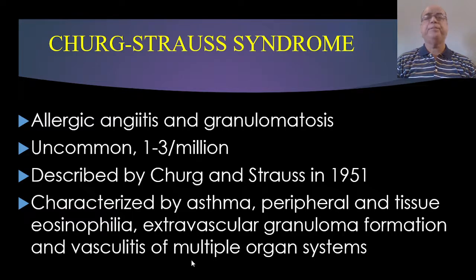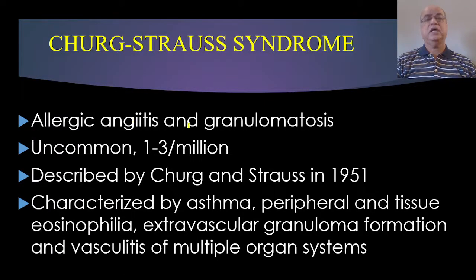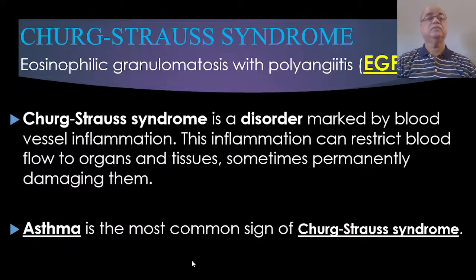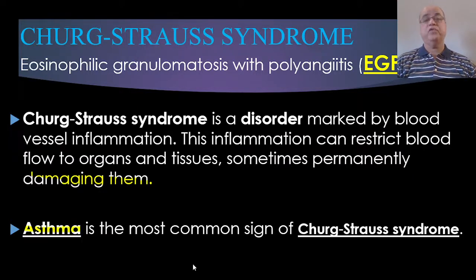Next is Churg-Strauss syndrome, also called allergic angiitis and granulomatosis. It is very uncommon — about one to three cases per million. It was described by Churg and Strauss in 1951. It is characterized by asthma, peripheral and tissue eosinophilia, extravascular granuloma formation, and vasculitis of multiple organ systems. It is also called eosinophilic granulomatosis with polyangiitis (EGPA). It is a disorder marked by blood vessel inflammation which can restrict blood flow to organs and tissues, sometimes causing permanent damage. Asthma is the most common sign.